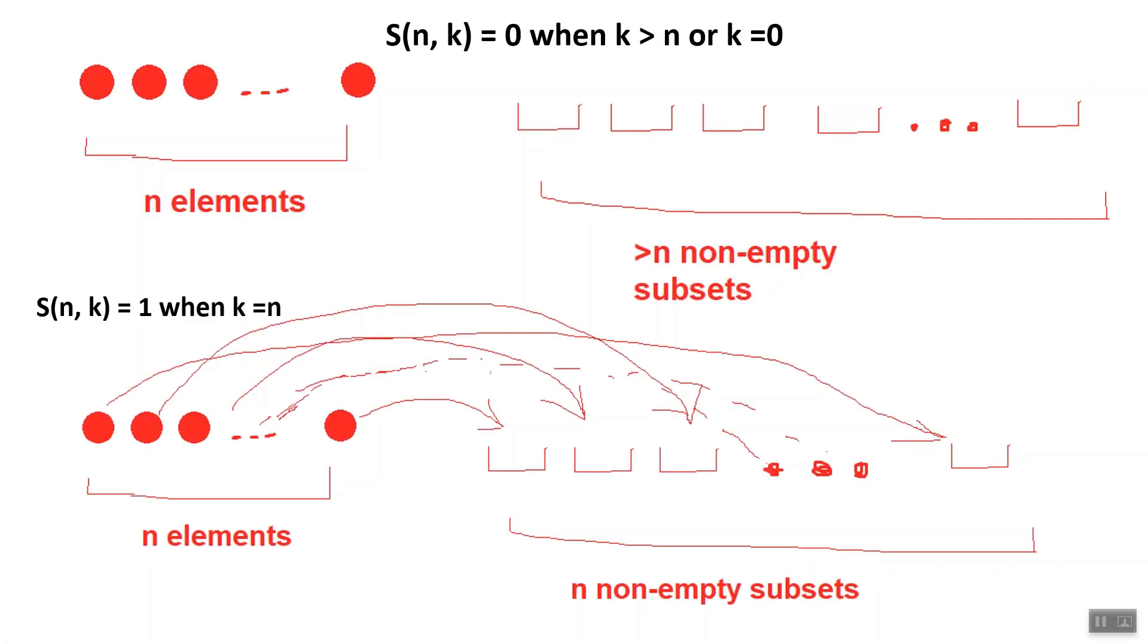We can generalize what we just discovered above to S(n,k) equals 0 when k is greater than n or k equals 0 for all n greater than 0. This is simply because we can't partition a set into more non-empty subsets than we have elements in that set to begin with.